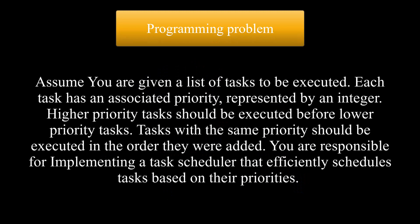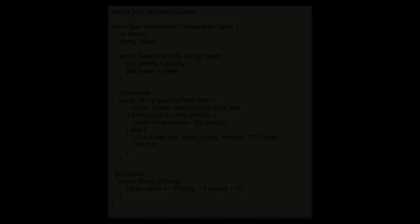Now let's look at code for a real-world problem that uses priority queue. Assume you are given a list of tasks to be executed. Each task has an associated priority represented by an integer. Higher priority tasks should be executed before lower priority tasks. Tasks with the same priority should be executed in the order they were added. You're responsible for implementing a task scheduler that efficiently schedules tasks based on their priorities.